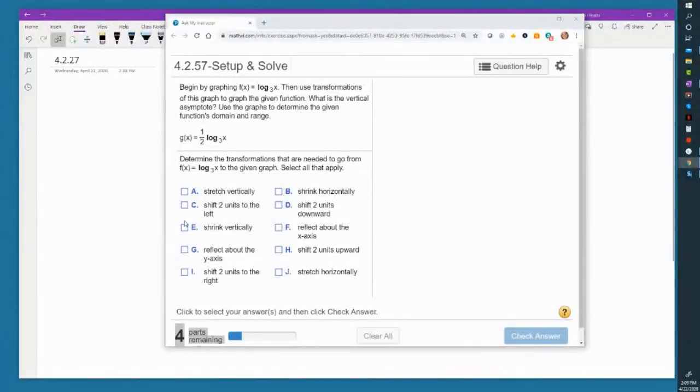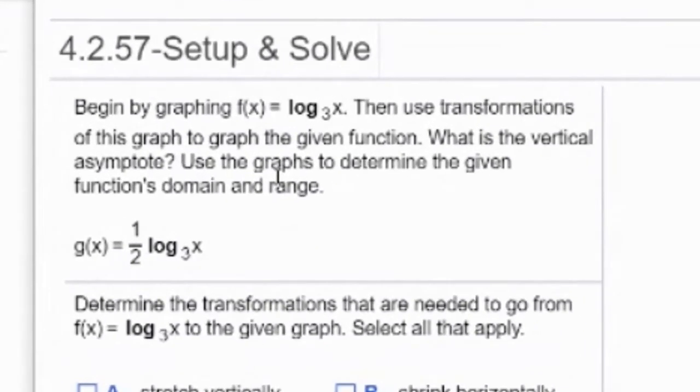Okay, so in this problem, it's telling you begin by graphing f(x) = log base 3 of x. Then use transformations of this graph to graph the given function. What's the vertical asymptote? Use the graphs to determine the given function's domain and range.